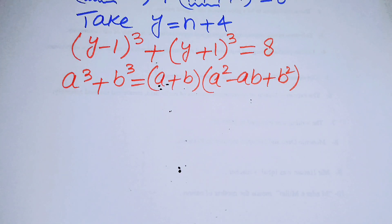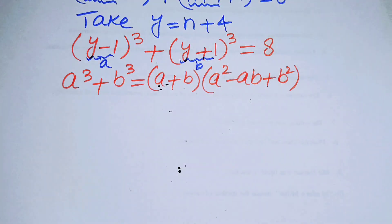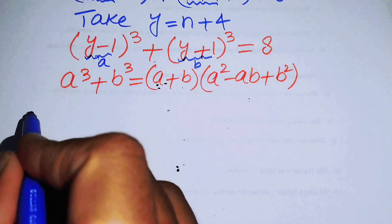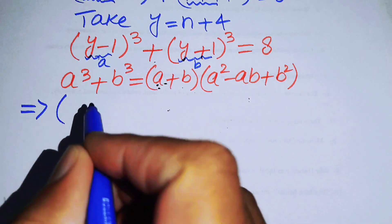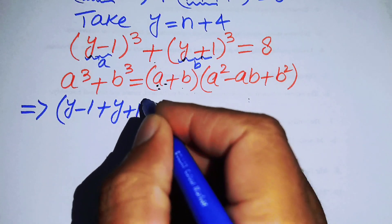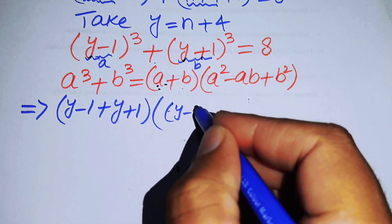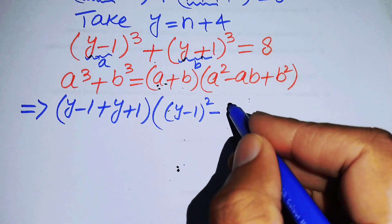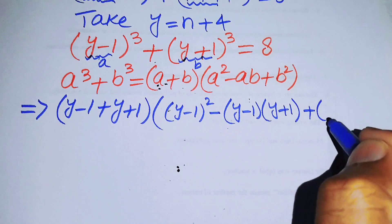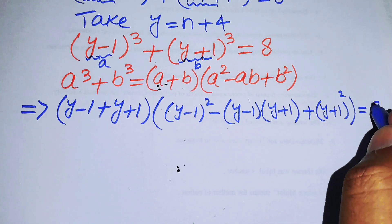Here, focus on the left-hand side. Our a is (y−1) and b is (y+1). Substituting into the formula, we get (a+b) = (y−1)+(y+1), times a²−ab+b², which is (y−1)²−(y−1)(y+1)+(y+1)², and this equals 8.